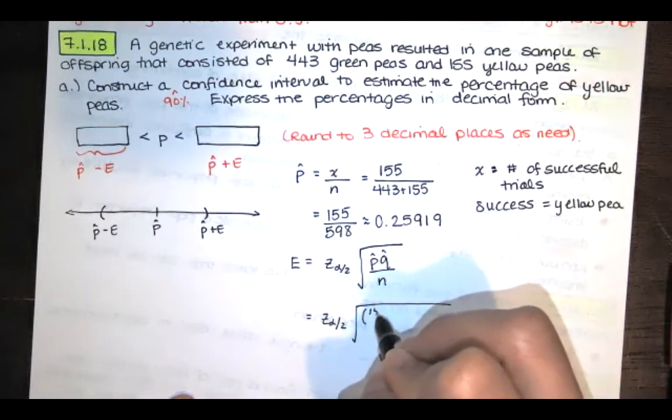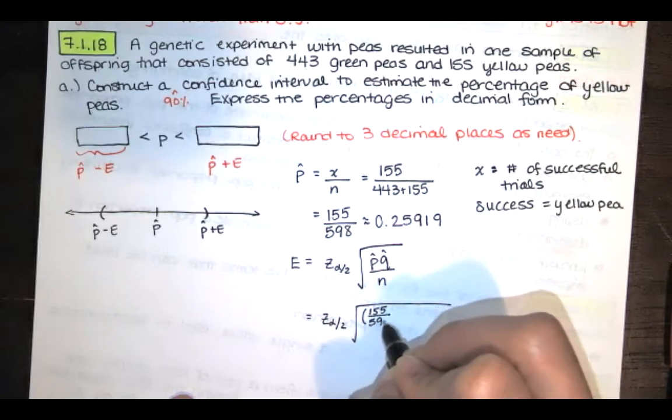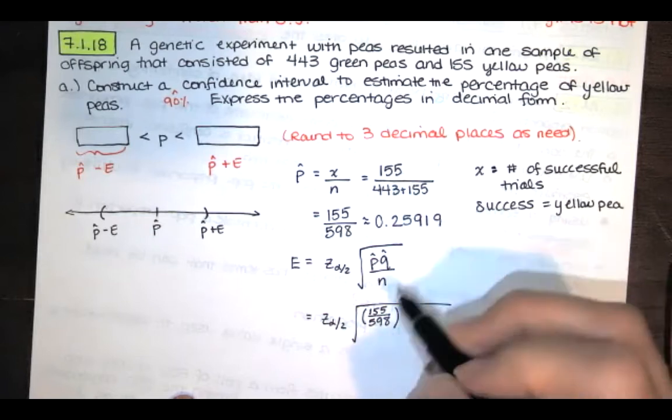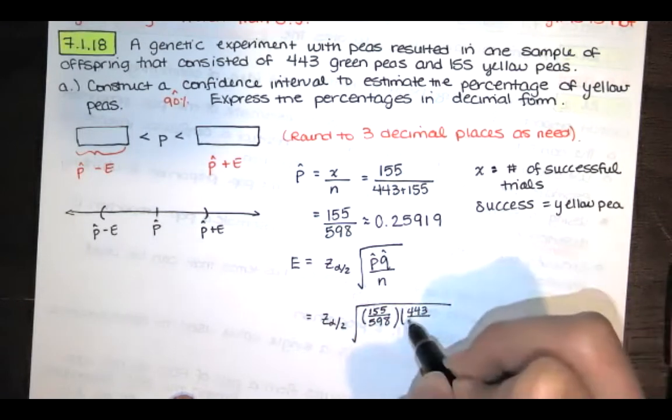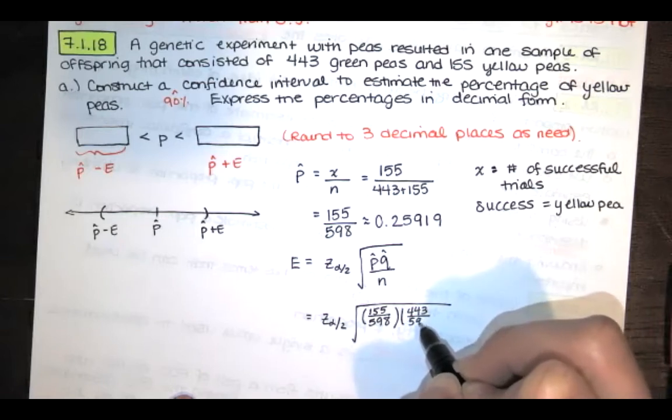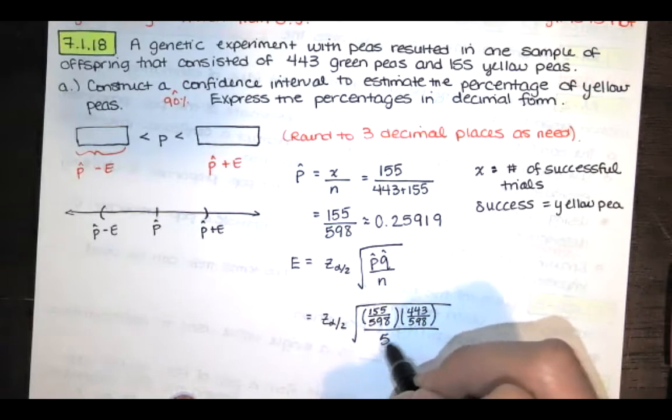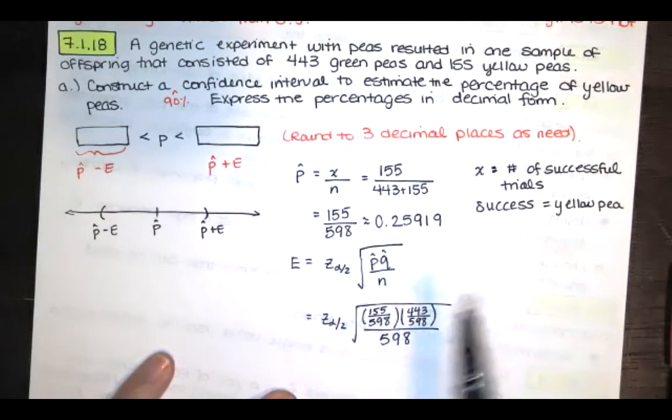I think I want to use that exact fraction, 155 over 598. Q-hat is the number of failures, so that's going to be 443 over 598. And we'll divide those by 598. So that's giving us that standard deviation of the sample proportions. And then we want z sub alpha over 2.